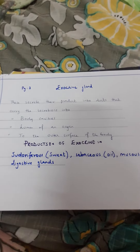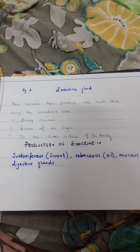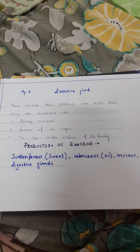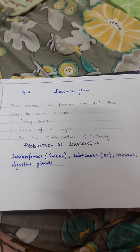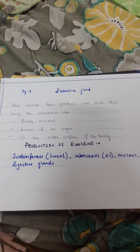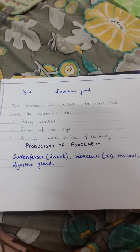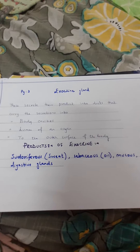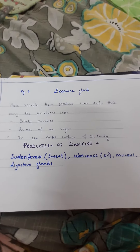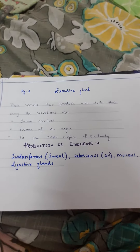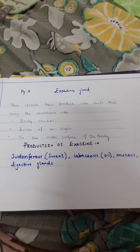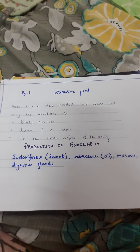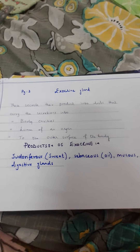For example, you have the sweat glands or the sebaceous glands whose secretions pass through ducts via the pores to the outer surface of the body or body cavities.